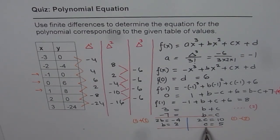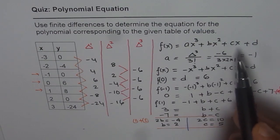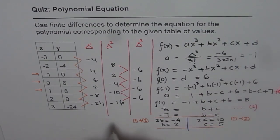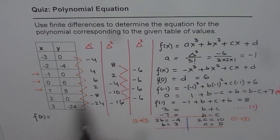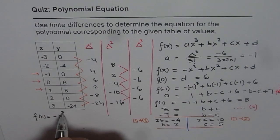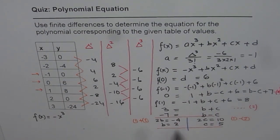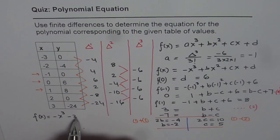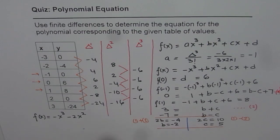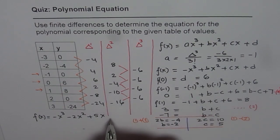Now we substitute all values back into the equation. Our function is f(x) equals minus x³ minus 2x² plus 5x plus 6. That is the solution.